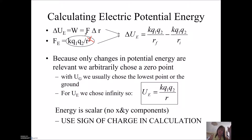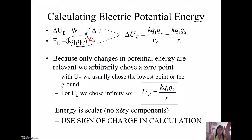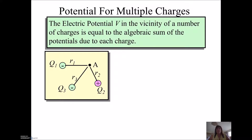One thing that's very, very important to remember is that energy — whether we did it in AP Physics 1 or whether we do it now — energy is a scalar. That means we don't have to do x and y components. No trigonometry — we just add stuff together. In electric potential energy, it's very important that you use the sign of the charge. If you're adding stuff together and you have a negative charge, then you're really subtracting. If I have multiple charges, whether calculating electric potential energy or electric potential, you're just doing an algebraic sum of all the potentials or potential energies.